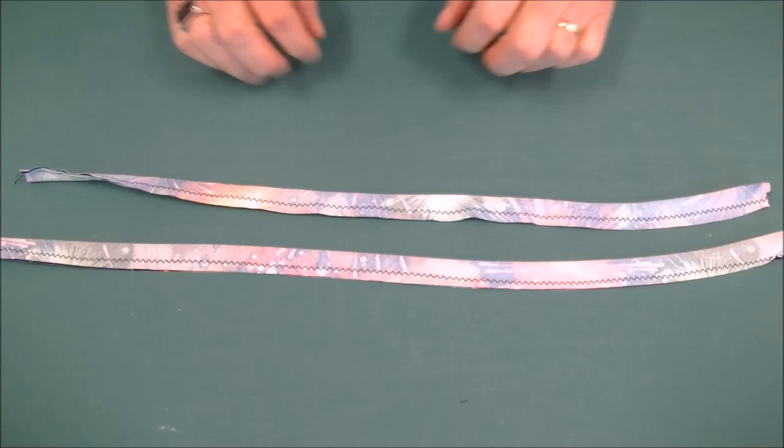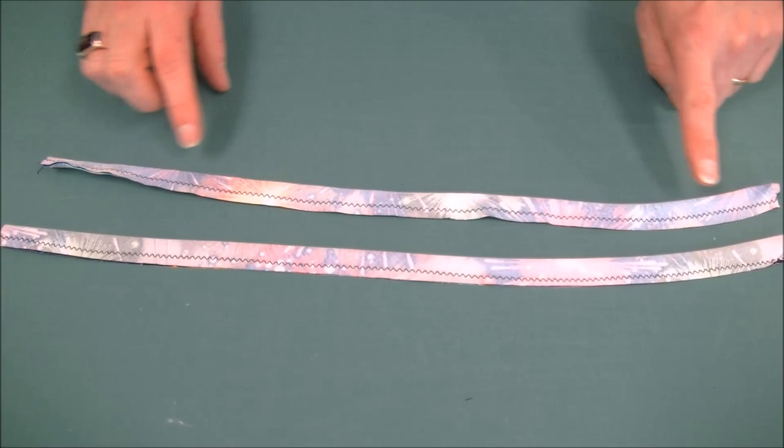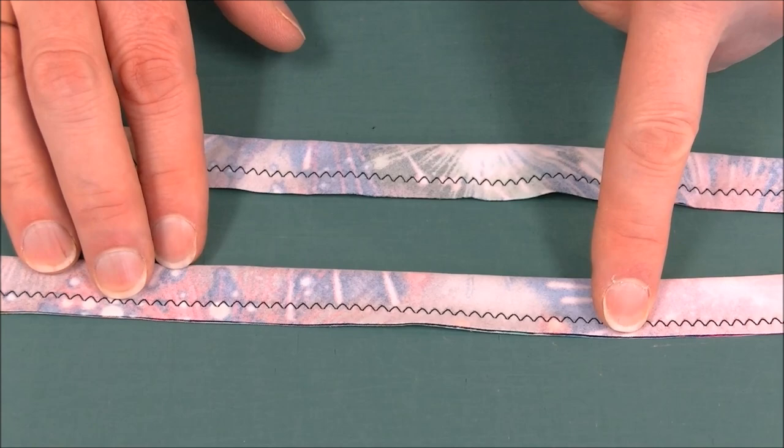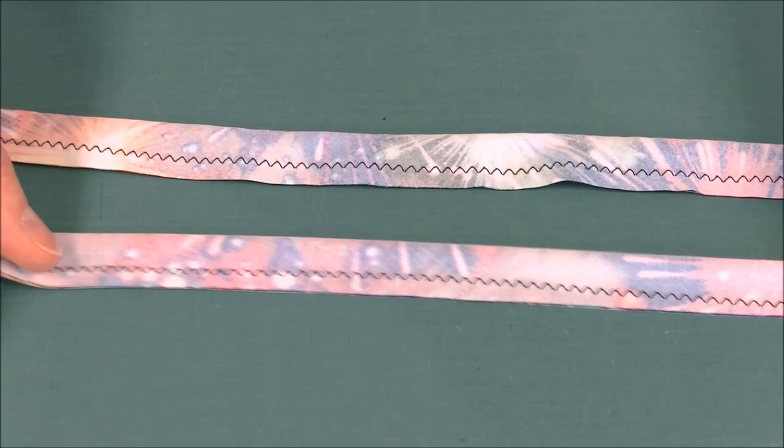The next thing we want to work on is sewing our straps. We've got our two shoulder straps here, we've just folded them in half and done a quarter inch seam allowance with a zigzag stitch. Sewing with the zigzag will allow the straps to stretch without the seams breaking.